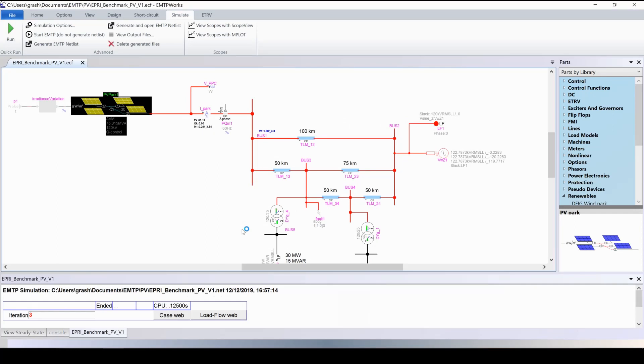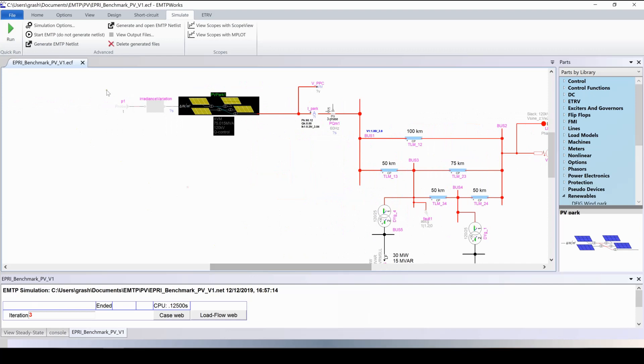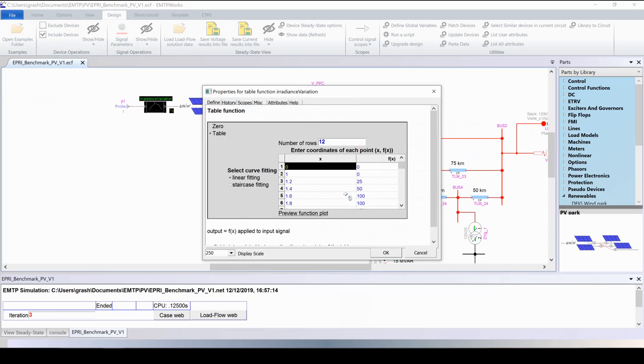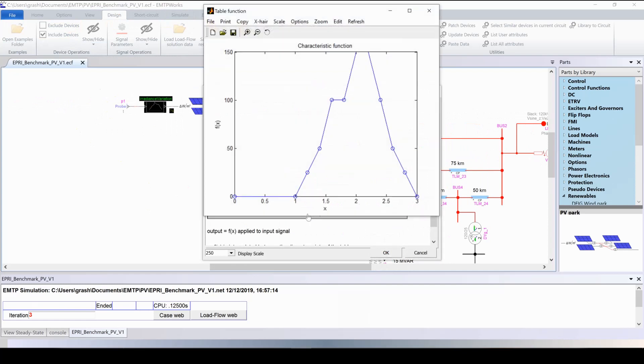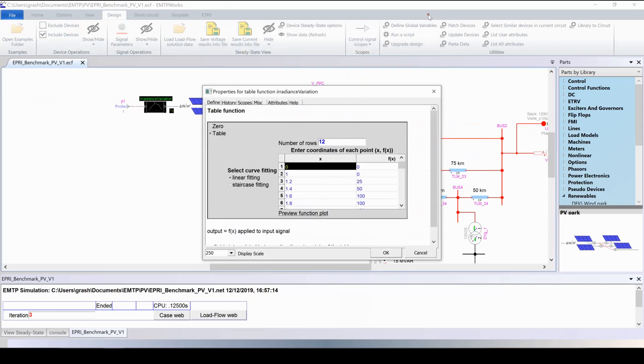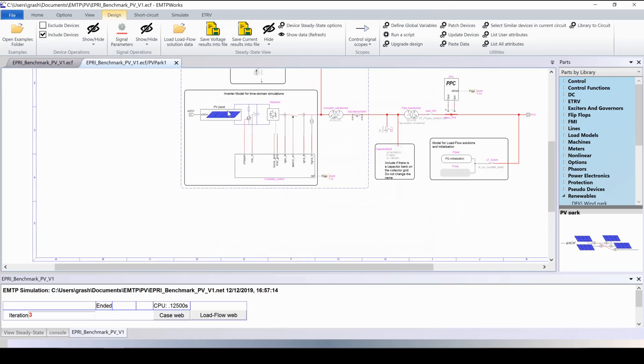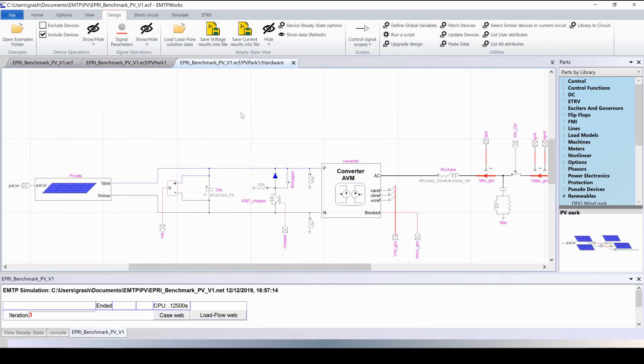Now let's do the time domain simulation and simulate an irradiance variation. We can simply include this device. This first device here is actually the simulation time and a table function here simulates the irradiance variation. The variation is defined in a lookup table and can be visualized here.